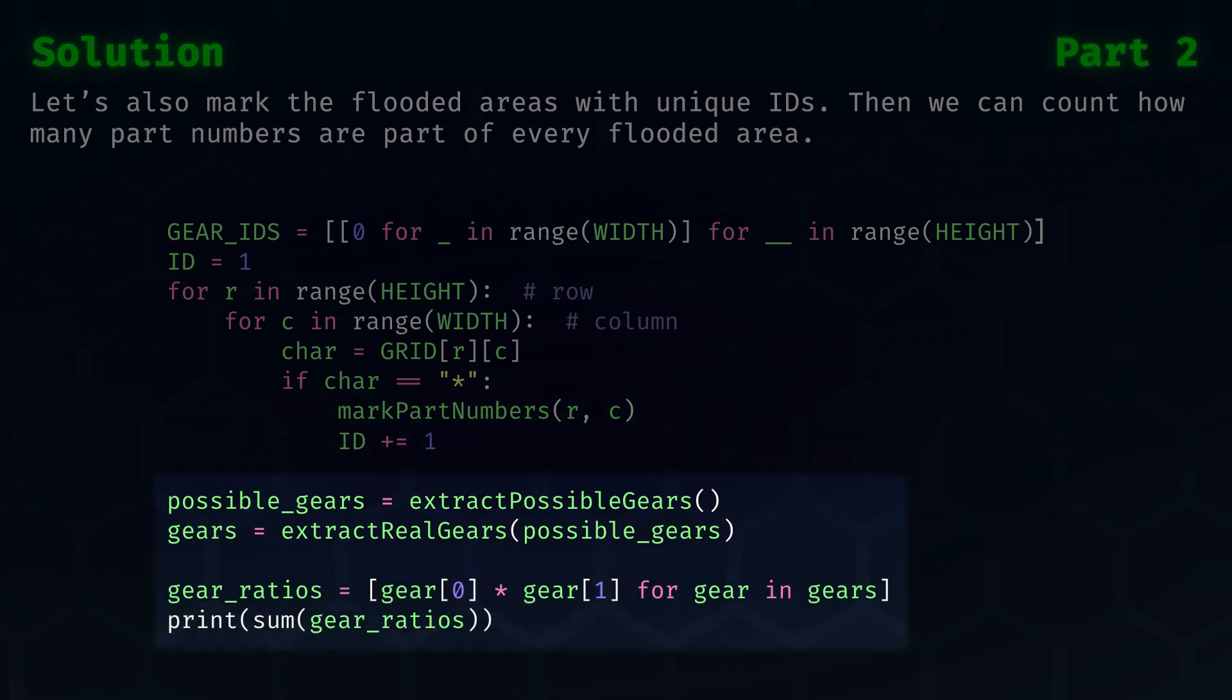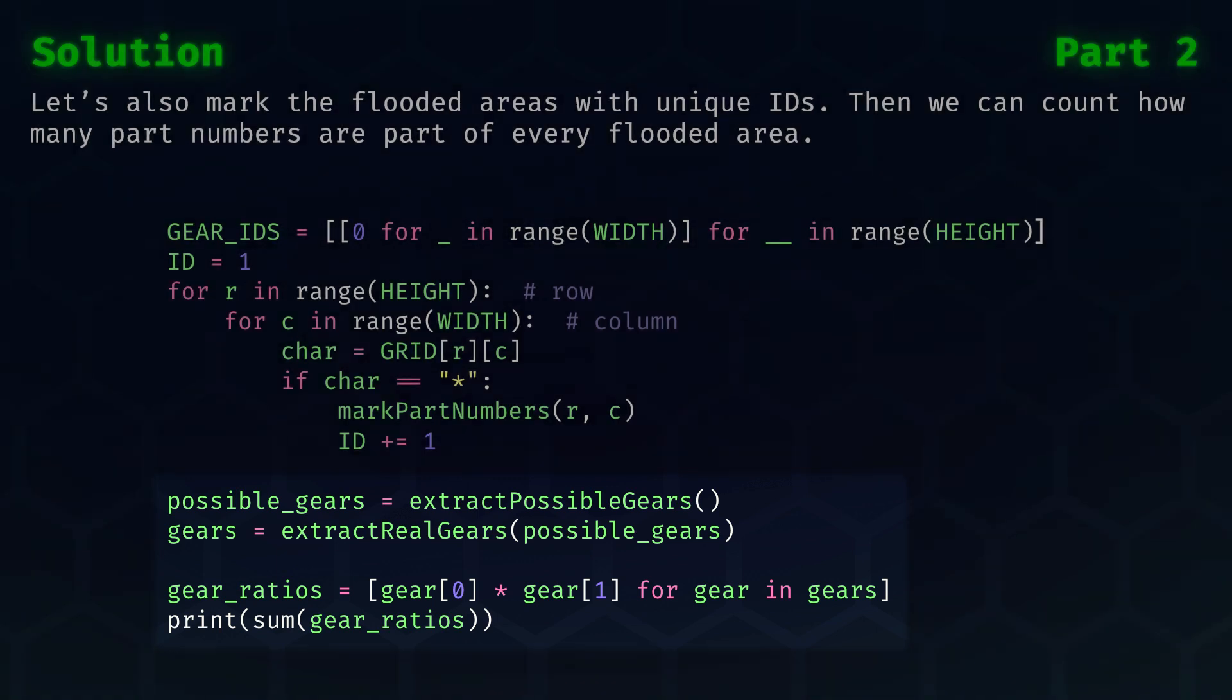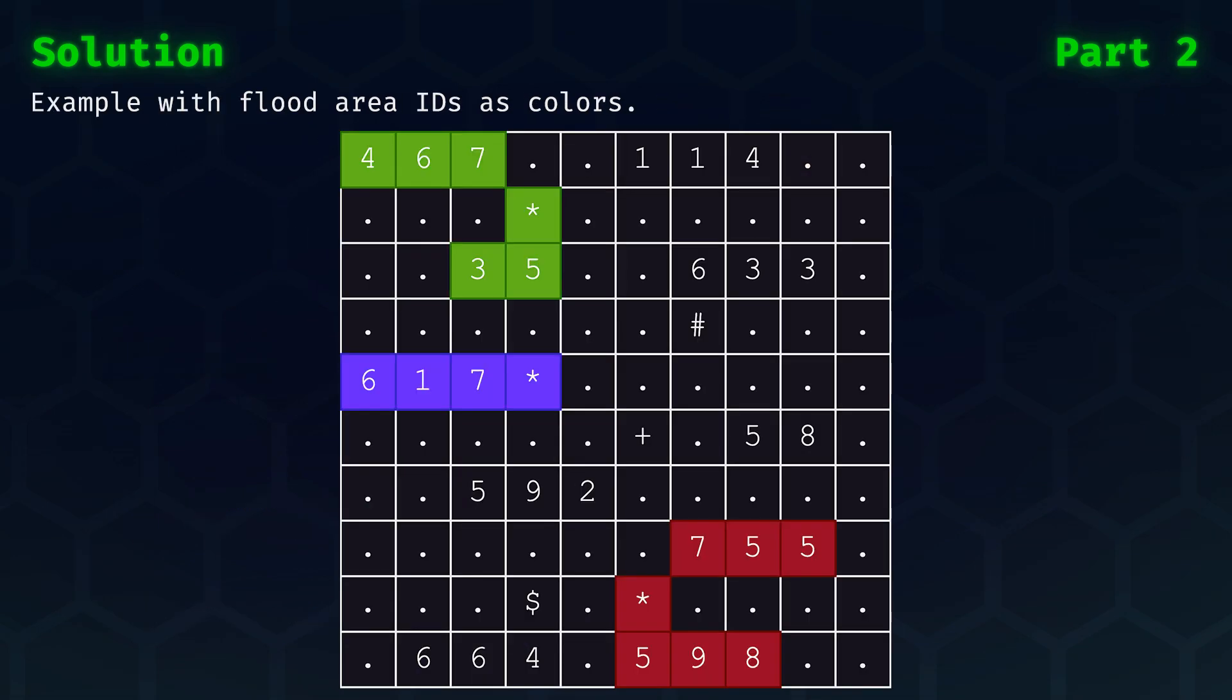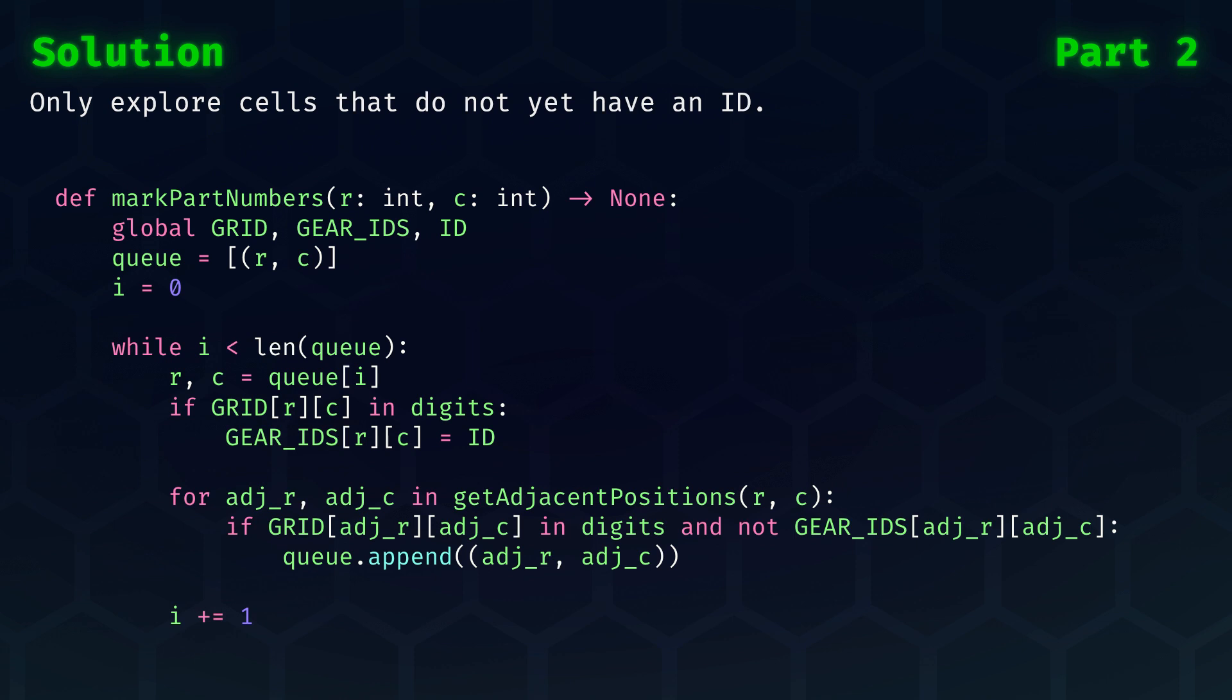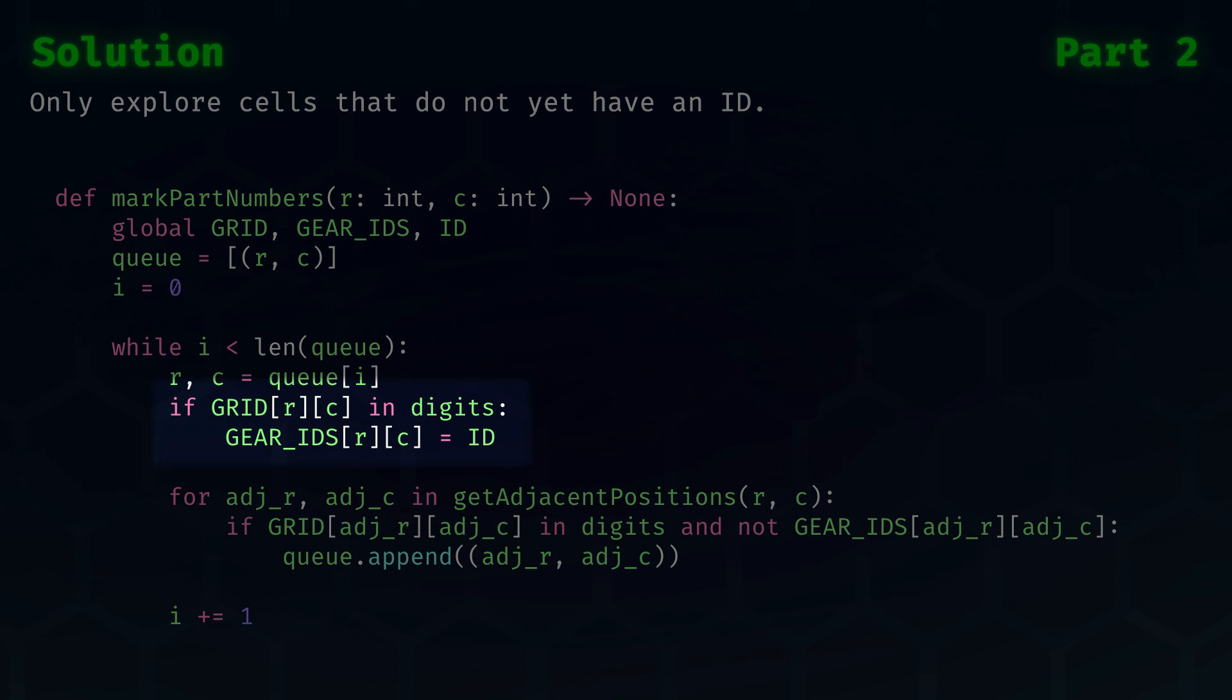At the end, we then need to collect all areas via extract possible gears, and we'll filter that down to the actual gears using the extract real gears function on those possible gears. To see how flood filling with IDs works on the example schematic, please have a look at this grid. Instead of using numbers, I marked the areas with colors, but the principle is the same. We managed to clearly identify groups, and only two of the groups have exactly two part numbers.